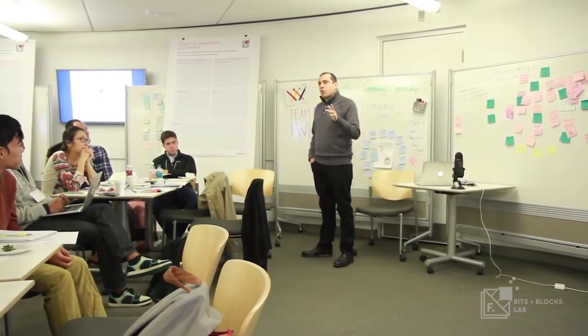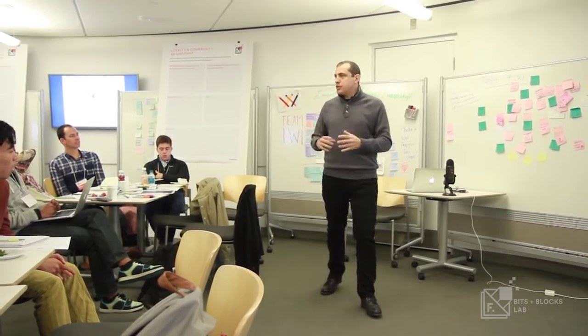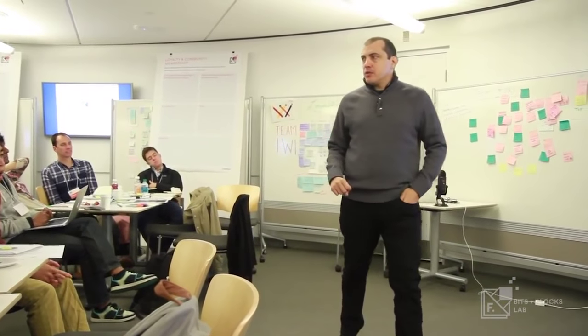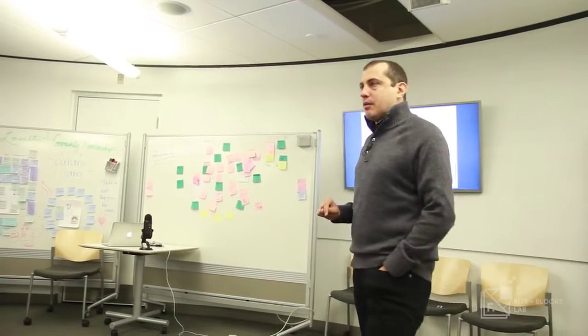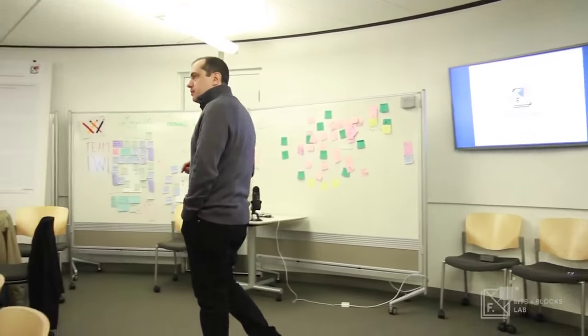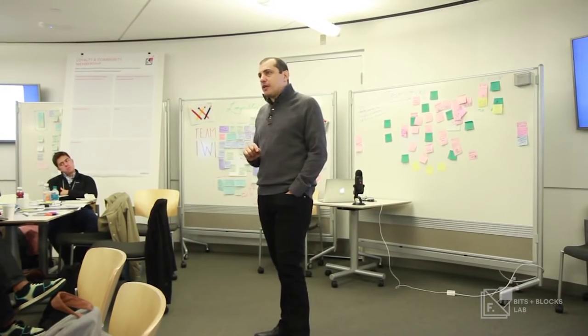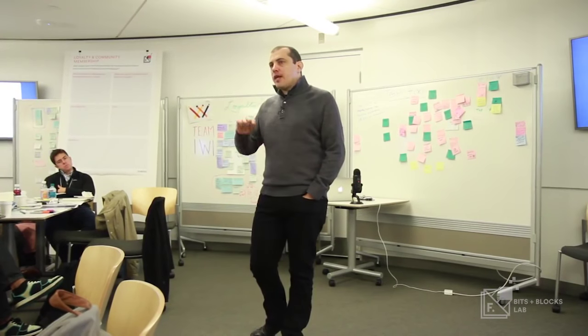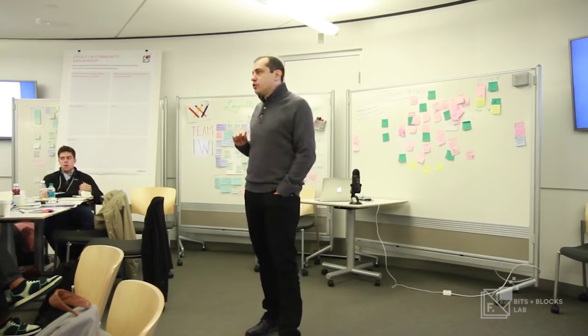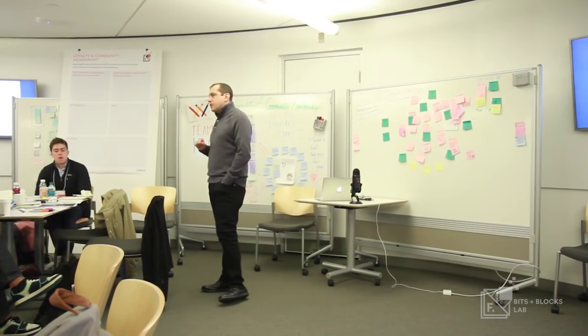Two things happened. One, we made the technology much easier to understand, much better, more polished. Another important thing happened. Society moved. Today, the average person knows exactly the difference between an at sign and a WWW, even though it is a horrible design. Society learned the language of the internet because it was valuable enough to learn the language of the internet. While we made the internet easier, society caught up and also understood the really inscrutable parts of the internet. The same thing is happening with Bitcoin.